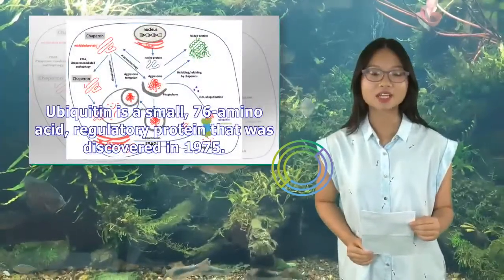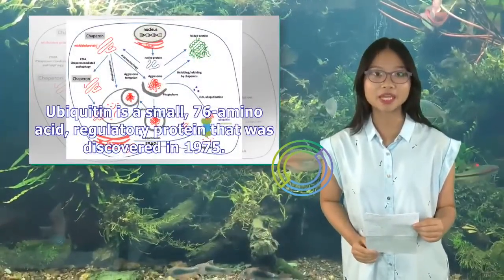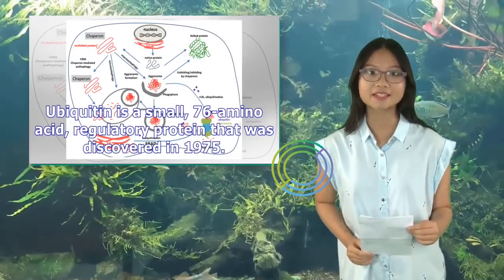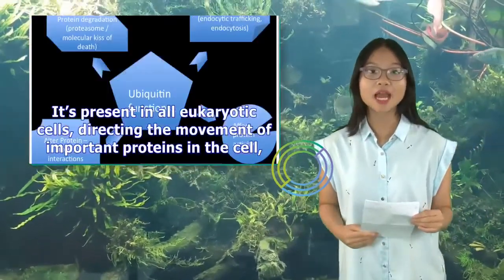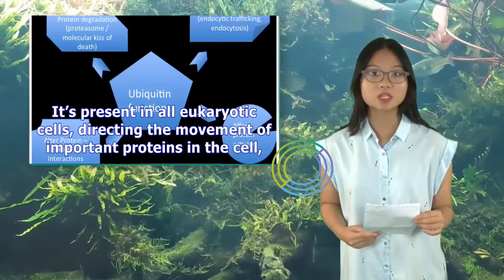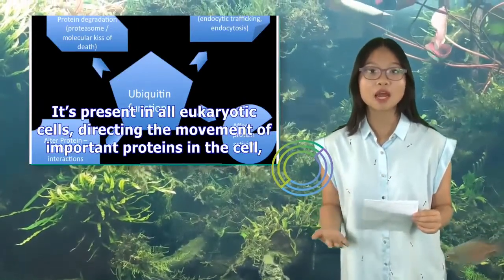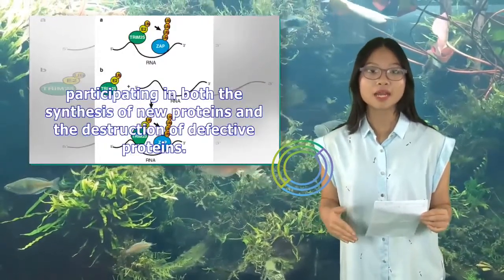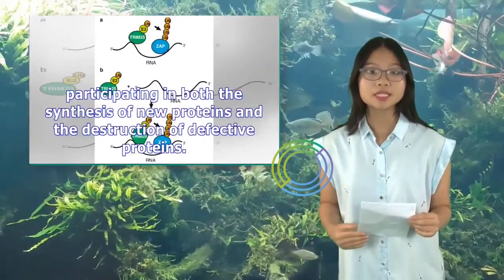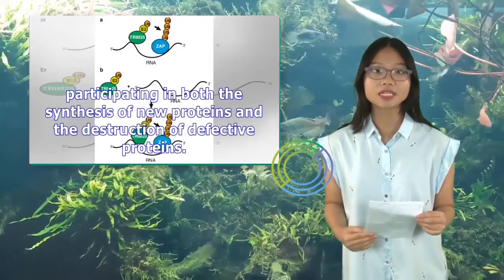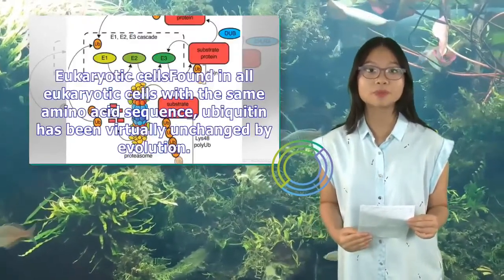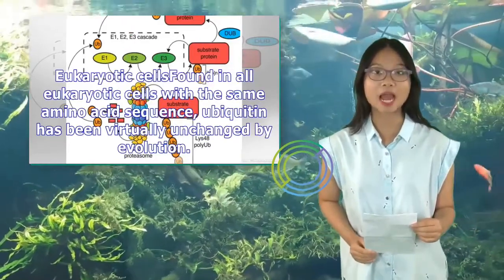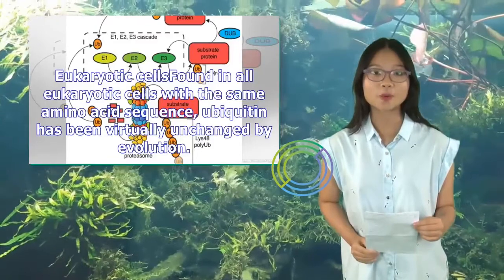Ubiquitin is a small, 76-amino-acid regulatory protein that was discovered in 1975. It's present in all eukaryotic cells, directing the movement of important proteins in the cell, participating in both the synthesis of new proteins and the destruction of defective proteins. Found in all eukaryotic cells with the same amino acid sequence, ubiquitin has been virtually unchanged by evolution.